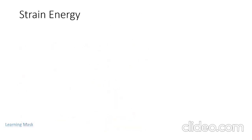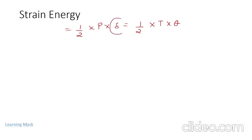Now we will learn about strain energy. It is the ability of a material to absorb energy when it is strained. The mathematical expression for strain energy is: U = (1/2)·P·δ + (1/2)·T·θ, where P is the applied load, δ is the elongation (increase in length), T is the applied torque, and θ is the twist produced by the torque.